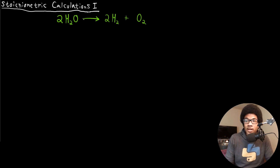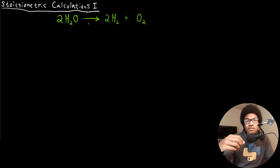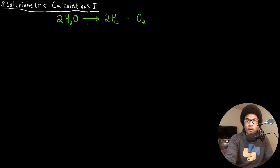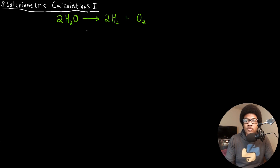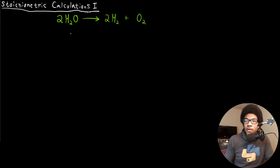We really just want to start looking at examples of how to do that — how to track: if I start with this amount of a certain reactant, how much of a certain product is going to be formed? Or if I form a certain amount of product, how much of my reactant must I have started with? There's one more topic I want to introduce before we look at an example problem, and that's called the mole ratio.